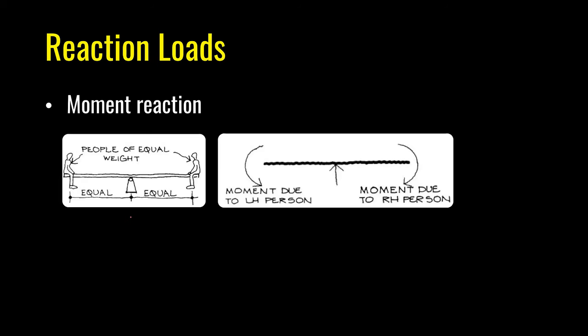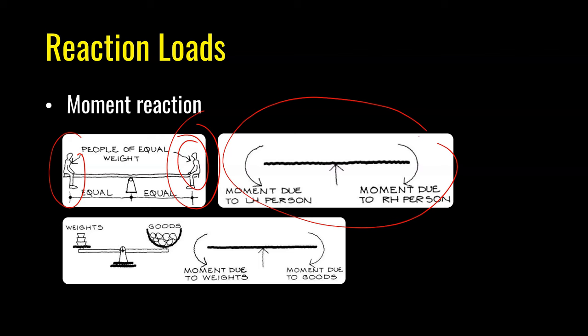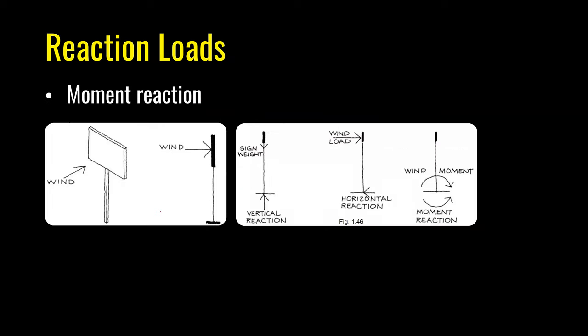Moment is one of the least understood topics in engineering. People can enjoy a seesaw as long as they are of equal weight and sit at an equal distance from the support — this is due to moment equilibrium. The left person causes an anti-clockwise moment and the right person causes a clockwise moment about the central support. Because both people are the same weight at equal distances, the anti-clockwise and clockwise moments are equal and opposite, so the system is in moment equilibrium.